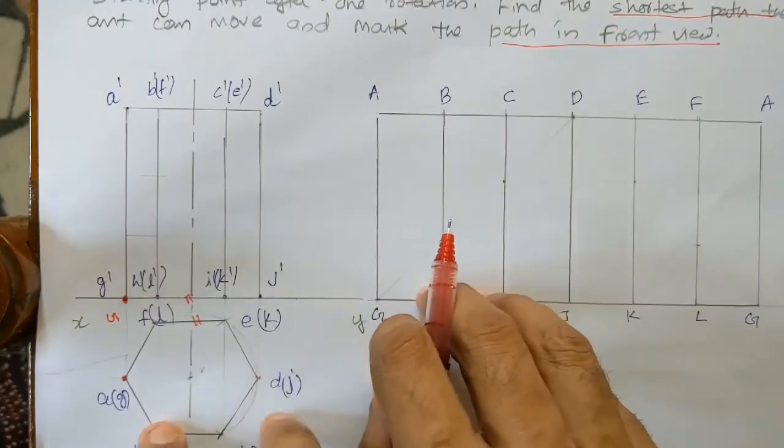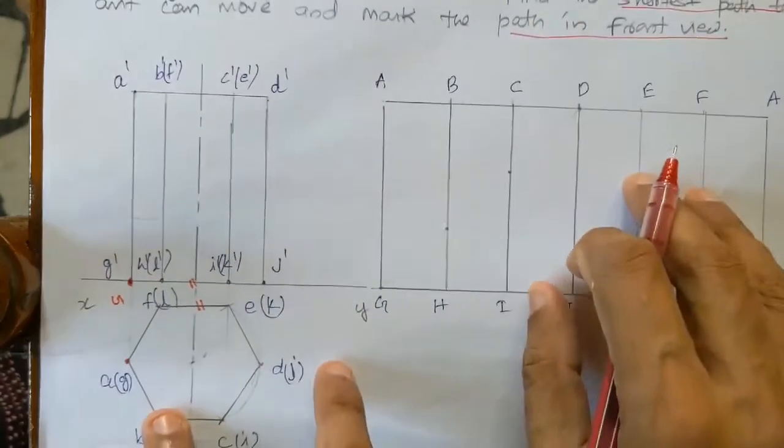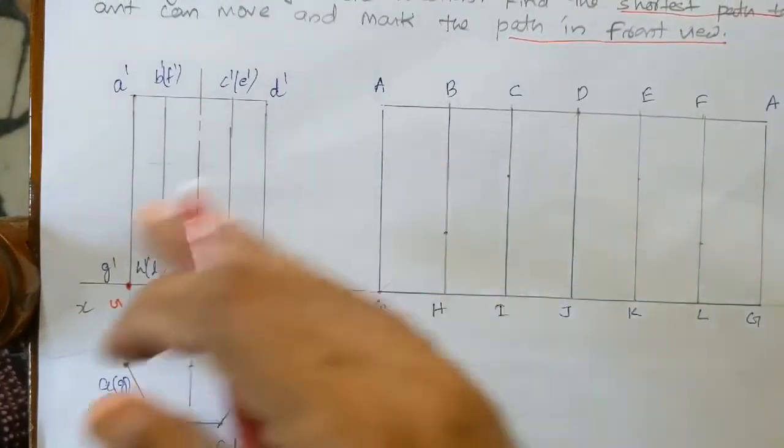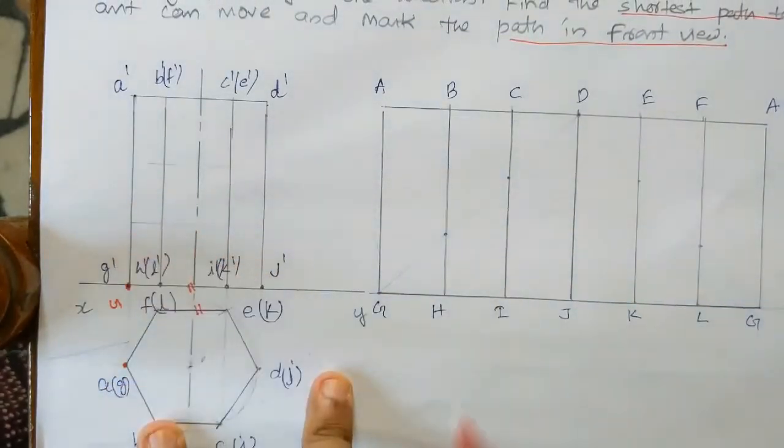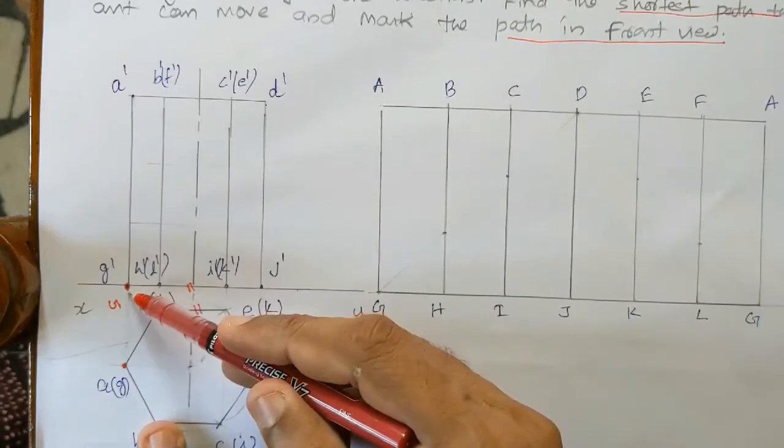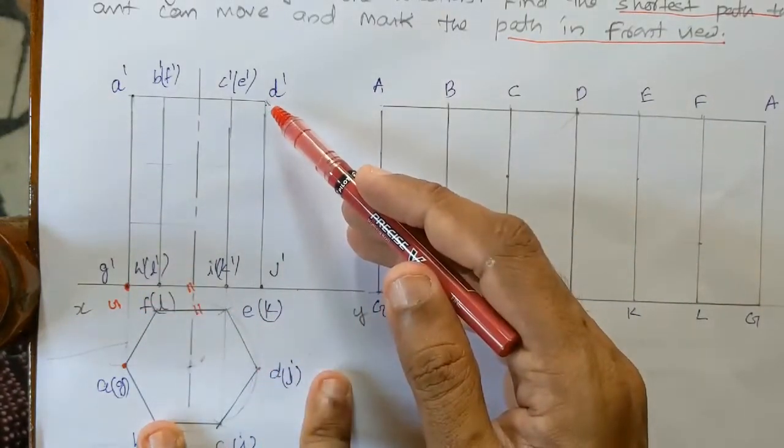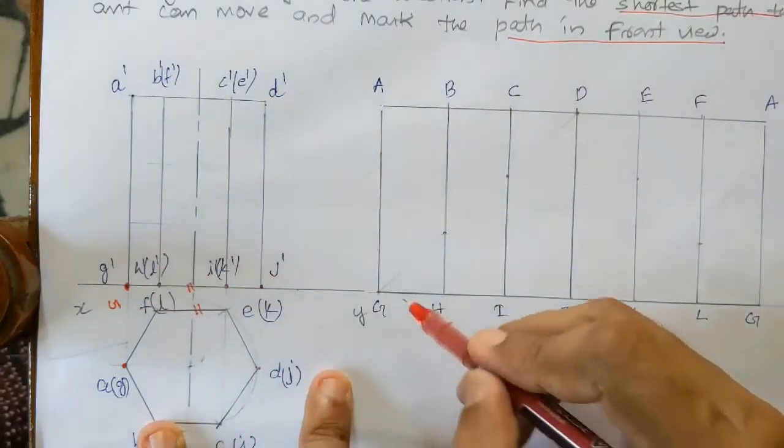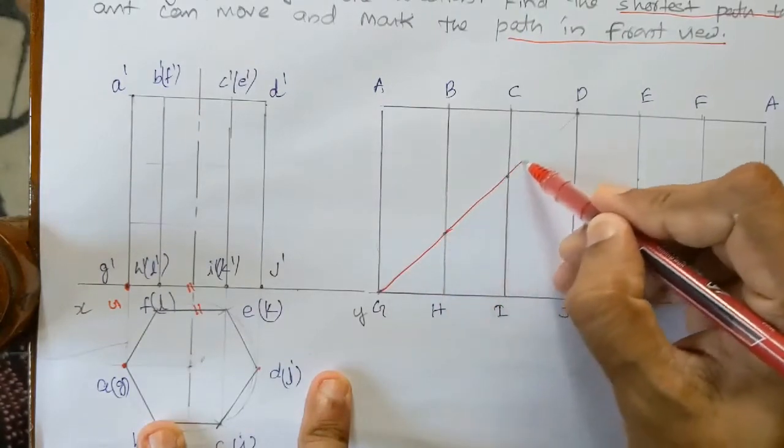The shortest problem is that we will give the development line to the front view. Then we will start with G and start with D and move. That is G and move.